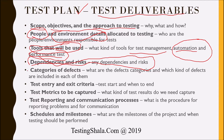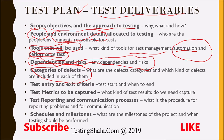The next item is categorization of defects. We clearly call out in the test plan how we are going to adopt defect management and how we are going to categorize defects under various categories. Everything will be documented in the test plan.